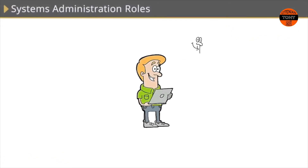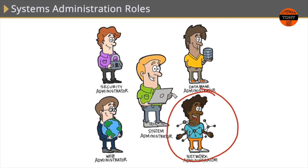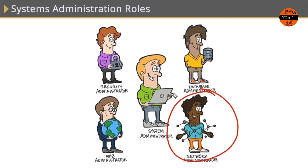Let's begin with a high-level look at all the administration roles within an organization. Let's start down here in the lower right with our network administrator. These guys and gals are responsible for our network infrastructure, which consists of routers and switches and the traffic flowing through them. Going clockwise, we also have web administrators. These folks are responsible for maintaining web servers — a machine in our data center that hosts websites and web services — and also exposing those websites and web services externally to the internet as well as to our internal users.